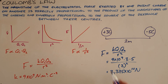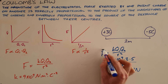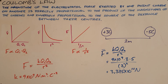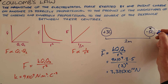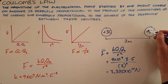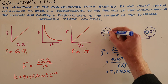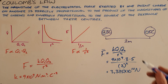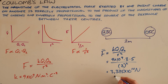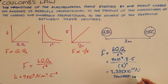This force is a vector, which means it must have direction. The direction is determined by the sign of the charges. Here we can see that these two objects are oppositely charged, which means that this force would be toward each other.